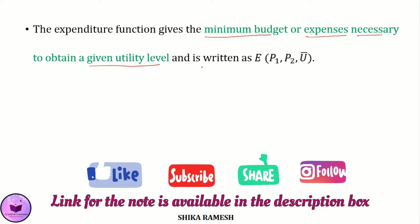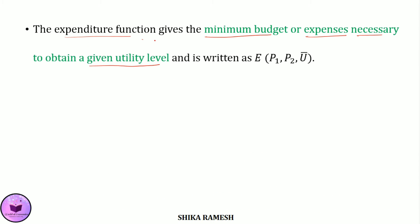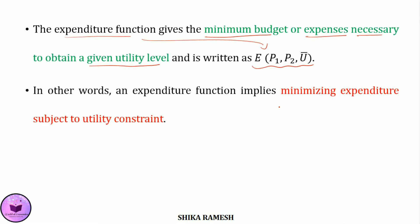The expenditure function can be written as E of P1, P2 and utility constraint. In other words, an expenditure function is nothing but minimizing expenditure subject to a utility constraint.